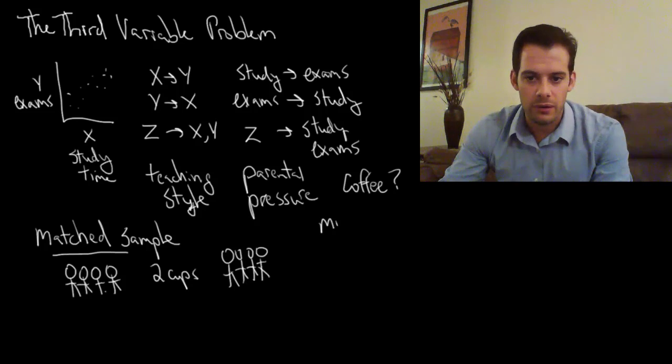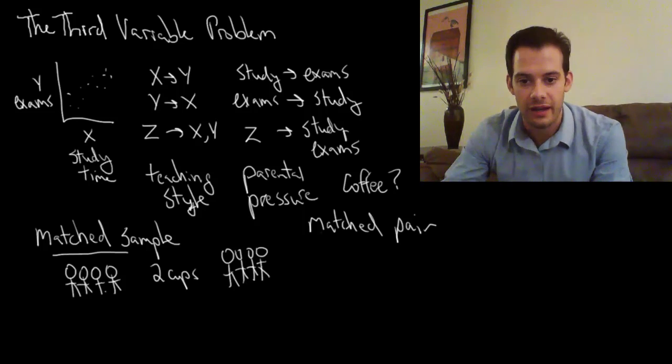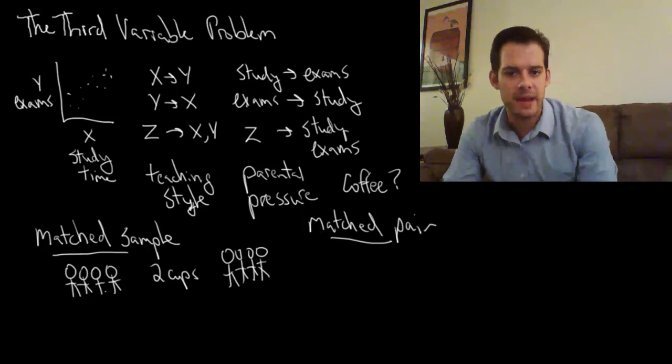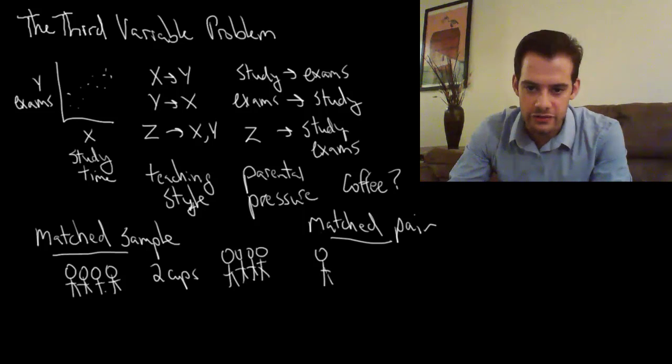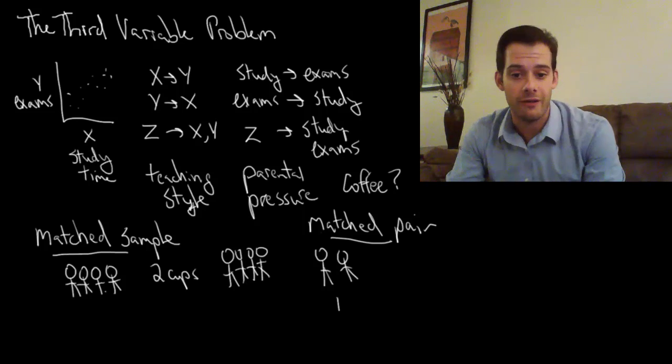Another way I could do it, a more specific way, would be to match my students in pairs. This would be a matched pair design. And in a matched pair what I would do is say, okay, here's a student, here's a student, both of these students each drink one cup of coffee per day.